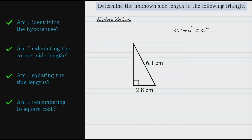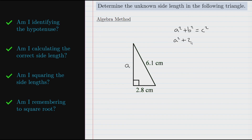This is where the second question comes into play: am I calculating the correct side length? Remember, we are not calculating the hypotenuse here, so we should not call that side c, because c in our equation represents the hypotenuse. So if we call the unknown side a, we can substitute: a² + b², which is 2.8², equals the hypotenuse squared, which is 6.1². This is a critical step — remember that c must always be the hypotenuse.